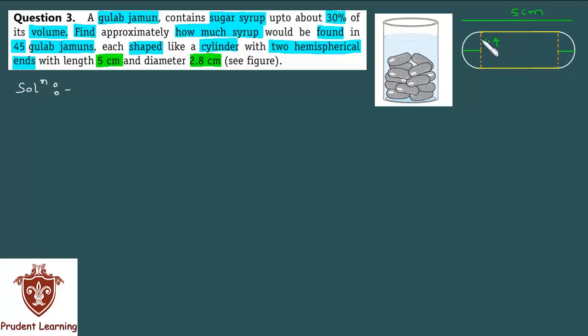This radius is actually the radius of both the cylindrical part and the hemispherical part. So this hemisphere has radius 1.4 and the cylinder's radius is also 1.4. Let me mark this separately - this portion is the hemisphere's radius, 1.4 cm. Again, this portion on this side is also the radius of this hemispherical portion, which is 1.4 cm.